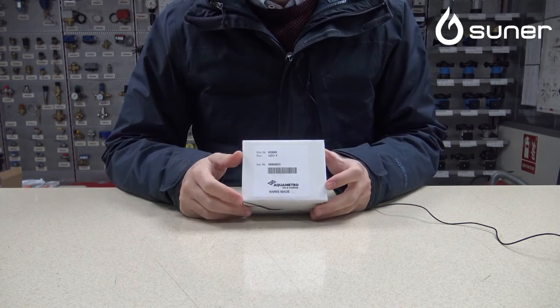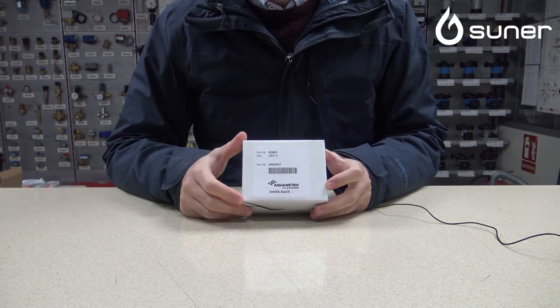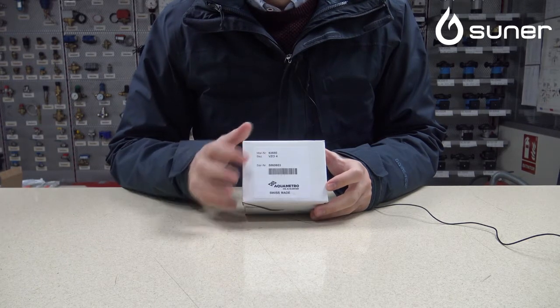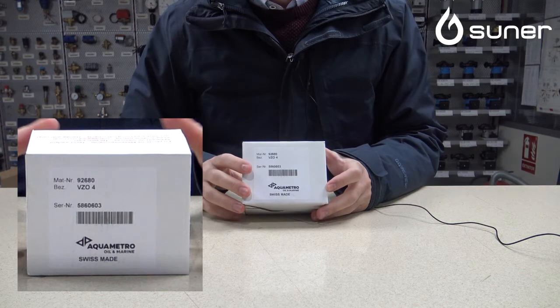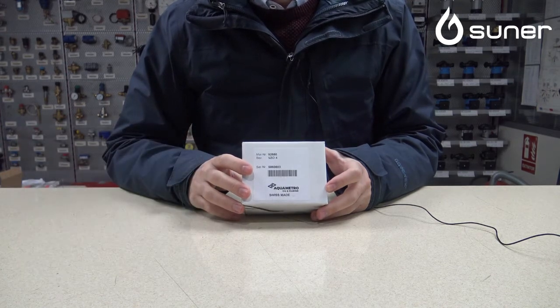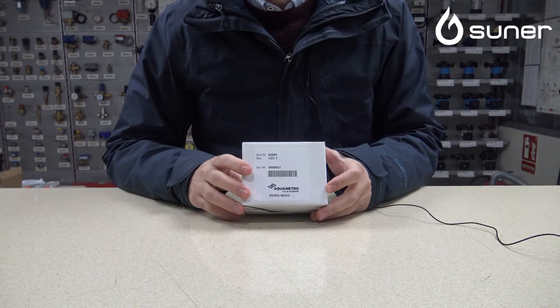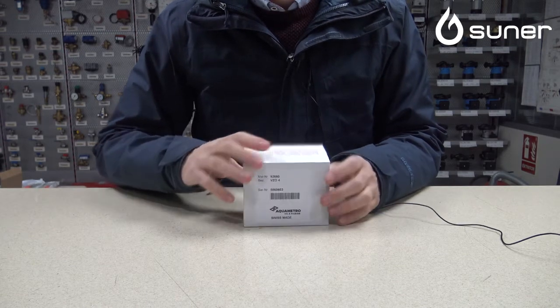Vamos a ver uno de los contadores de gasóleo domésticos más famosos que tenemos, que es el modelo, tal y como se puede ver en la caja, VZ04. Este es un contador doméstico, no es apto para contadores de CEPSA ni oficiales, sino para un conteo doméstico.